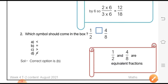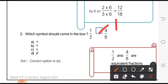Next we have: which symbol should come in the box? 1 by 2 and 4 by 8. If we observe here, 4 by 8 is equivalent to 1 by 2. When we reduce 4 by 8, it becomes 1 by 2 when divided by 4. That means the two fractions are equivalent, so we put an equality sign between them. The correct option is b.